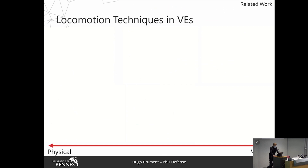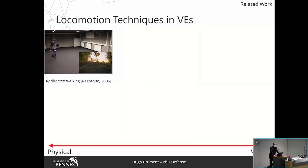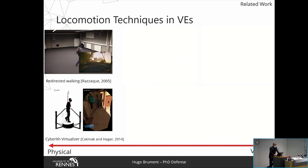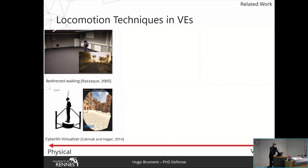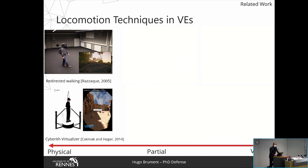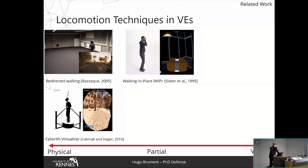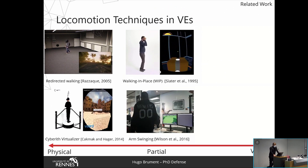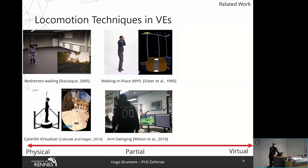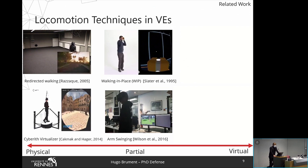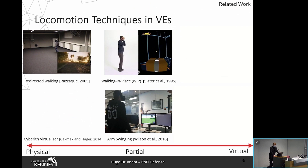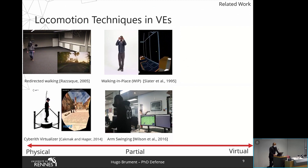Regarding physical techniques, we have, for instance, redirected walking where users' physical motion is manipulated to enable them to remain in the workspace while exploring a larger virtual environment. It is also possible to use platforms to keep users in a limited space. Other techniques require partial physical movements, where gestures define motion in the virtual environment — either lower body gestures such as walking in place, or upper body gestures such as arm swinging. Physical techniques provide vestibular and proprioceptive feedback while exploring, but they either require user movement, large workspace, or expensive hardware. To counter this limitation, virtual techniques have been considered, such as teleportation and steering techniques.